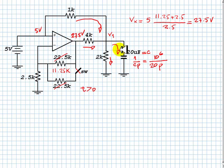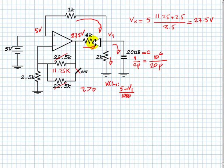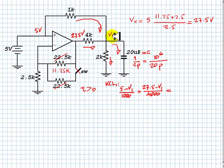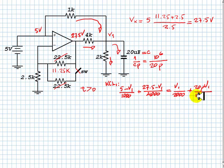This is not just a steady state anymore — there is a current through the capacitor. Writing a KCL equation for node v1: the current (5 − v1) divided by 1 kΩ, plus (27.5 − v1) divided by 4 kΩ, equals v1 divided by 2 kΩ, plus the capacitor current, which is 20p·v1 divided by a million. That is the equation we need to solve for v1.